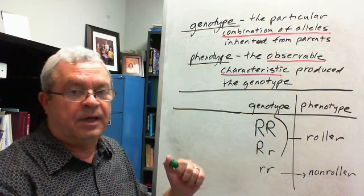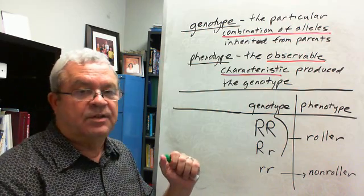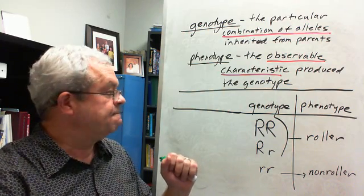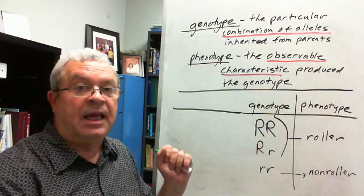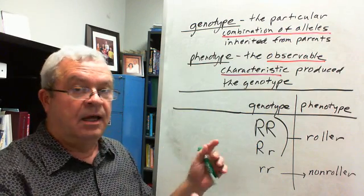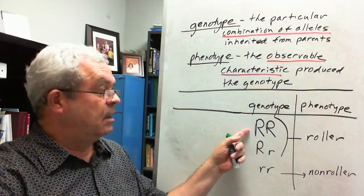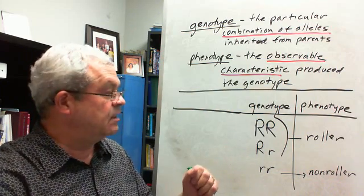What do those R's stand for again? The big R stands for the roller allele. Little r stands for the non-roller allele. How come one's big, one's little? The big one means it's the dominant allele.